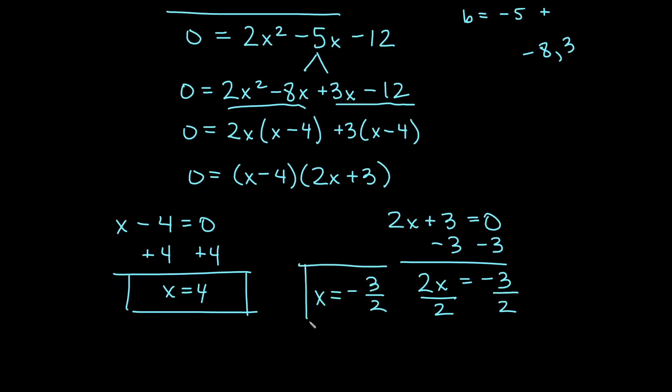That's our intro to solving by factoring. You need to get everything equal to zero, and what's remaining on the other side — you then attempt to factor, and if it's factorable, set those factors equal to zero and find your solutions. Check out our example video — we have more examples with some that have a common factor and some that don't. We'll see you in the next one.